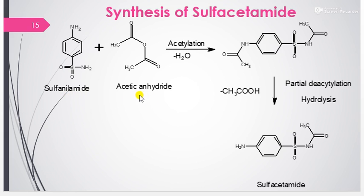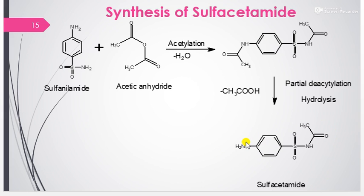The synthesis of sulfacetamide is carried out with sulfanilamide and acetic anhydride. When sulfanilamide is treated with acetic anhydride, it undergoes an acetylation reaction with removal of a water molecule to form an intermediate. This intermediate then undergoes partial deacetylation and hydrolysis to give sulfacetamide. It is a very simple synthesis using sulfanilamide and acetic anhydride.